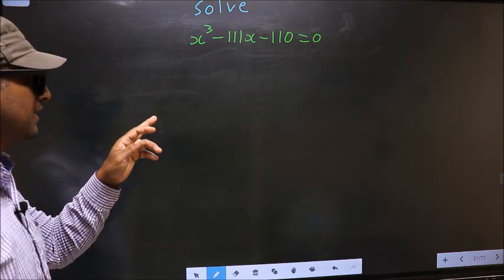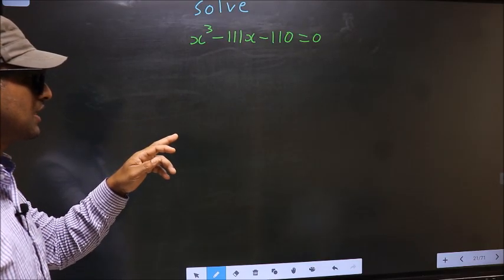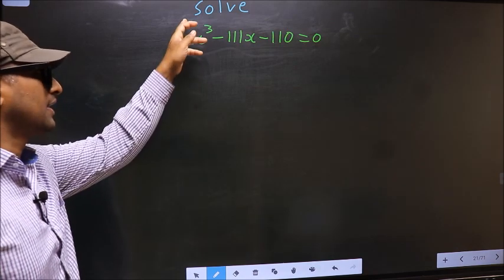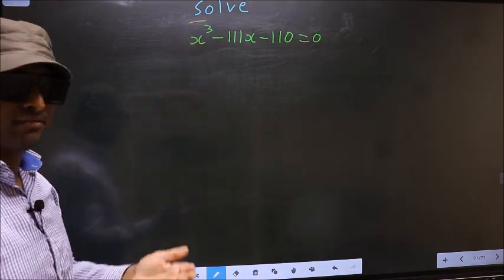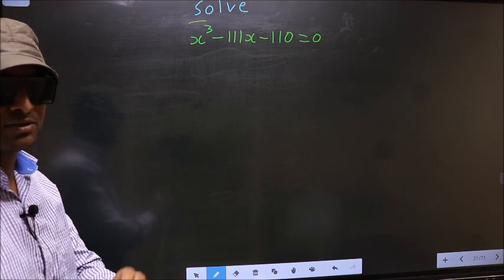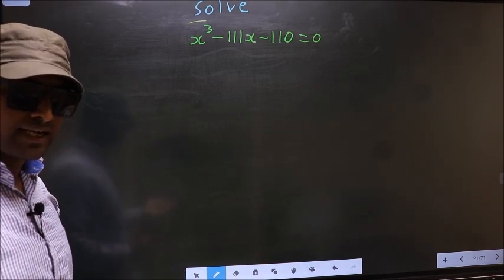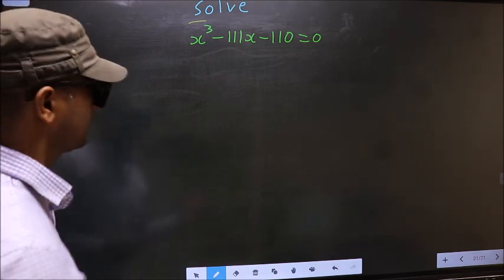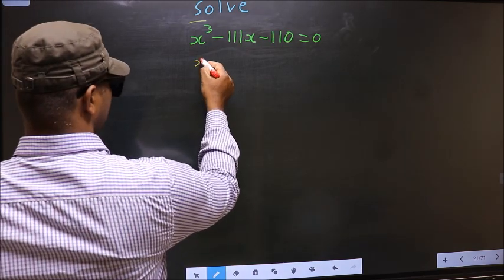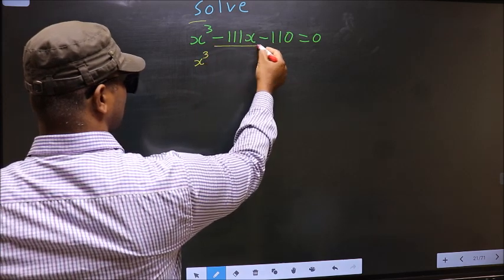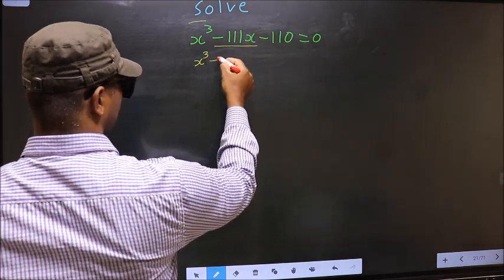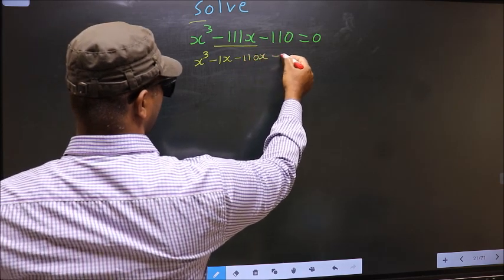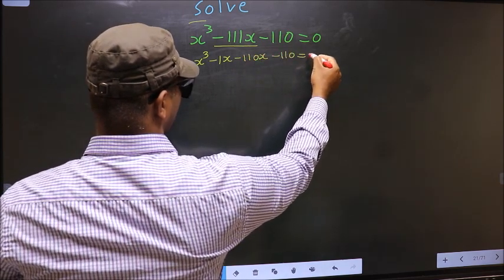Solve x³ - 111x - 110 = 0. Here they told us to solve, which means we should get the values of x. For that we have to change the x term — in place of -111x, I write -1x - 110x - 110 = 0.